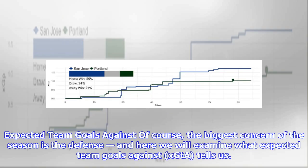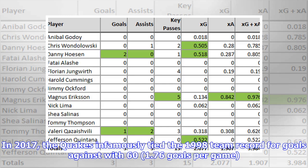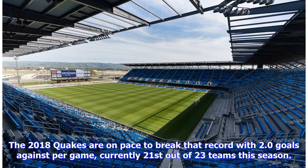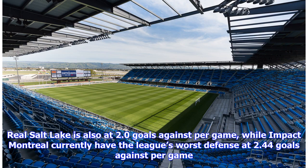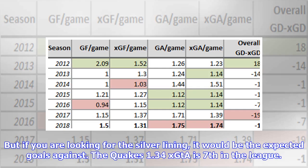Of course the biggest concern of the season is the defense, and here we will examine what expected team goals against (xGTA) tells us. In 2017 the Quakes infamously tied the 1998 team record for goals against with 61 — 76 goals per game. The 2018 Quakes are on pace to break that record with 2.0 goals against per game, currently 21st out of 23 teams this season. Real Salt Lake is also at 2.0 goals against per game, while Impact Montreal currently have the league's worst defense at 2.44 goals against per game. But if you are looking for the silver lining, it would be the expected goals against — the Quakes' 1.34 xGTA is seventh in the league.